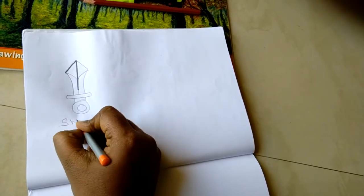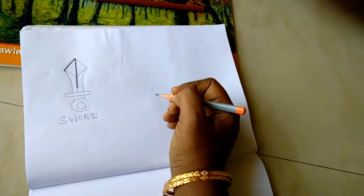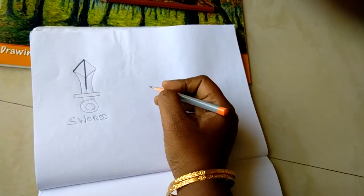So kids will be feeling very easy to draw this using number one. Now we'll draw the boat by using number one.